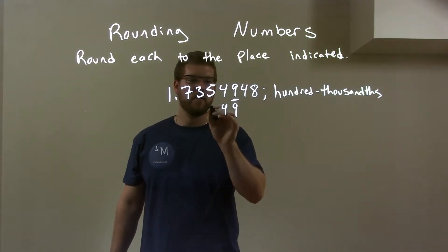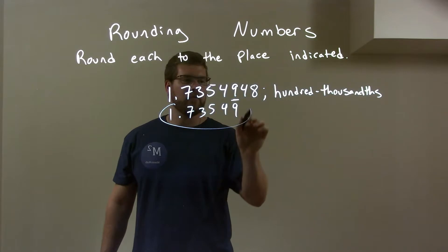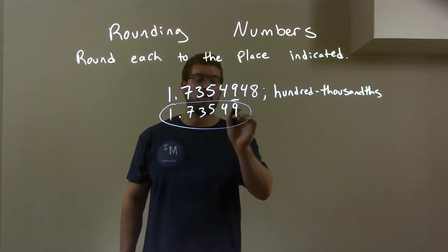And we bring down everything else. 4, 5, 3, 7. The decimal point and 1. So our final rounded answer is 1.73549.